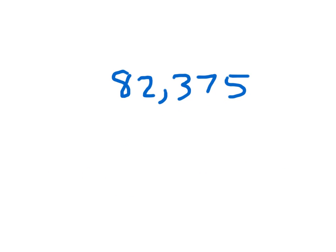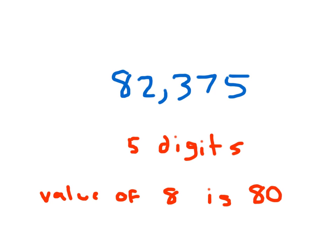How many digits are in this number? I've got 1, 2, 3, 4, and 5 digits. There are 5 digits in this number. What is the value of the 8? It's worth 80,000 because it is in the ten thousands place.